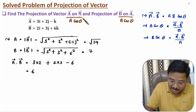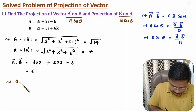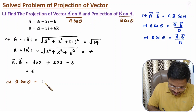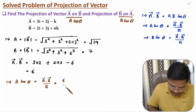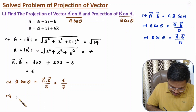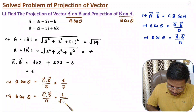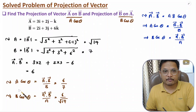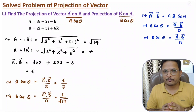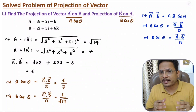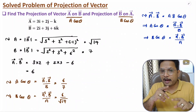Now we have all the values. The projection of A on B, which is A cosθ, equals A·B divided by |B| = 6/7. The projection of B on A, which is B cosθ, equals A·B divided by |A| = 6/√14. That is how we can identify the projection of one vector onto another vector. I hope you now have a fair idea about the Cartesian coordinate system and how to identify vector projections.